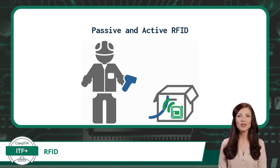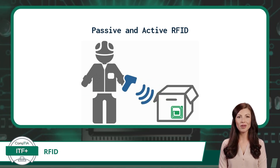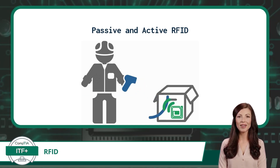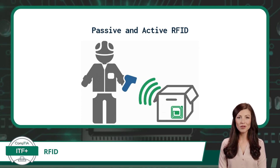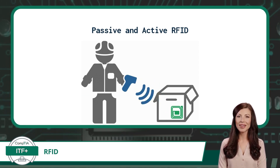Active RFID systems, on the other hand, use battery-powered tags that actively send signals to the reader, allowing for longer ranges and continuous tracking.